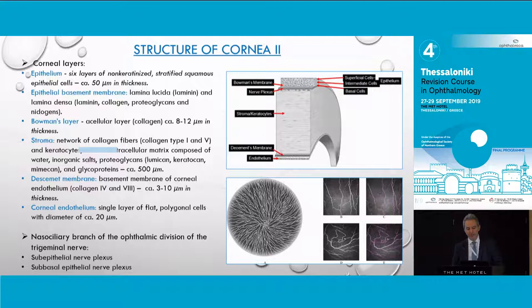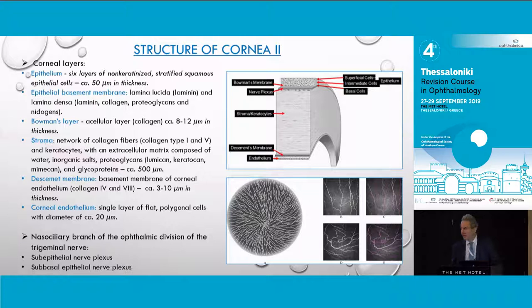We all know the layers of the cornea. It is composed of the epithelium, which is constantly regenerating, the basement membrane, the Bowman's layer, the stroma making up more than 80% of the corneal thickness, the Dua's layer, the Descemet's membrane, and the corneal endothelium, which has no capacity of regeneration.